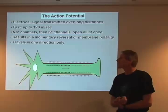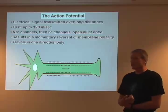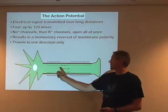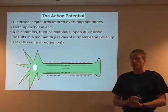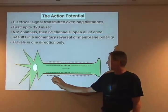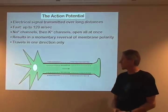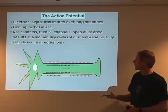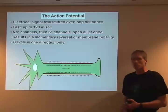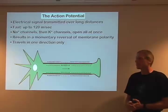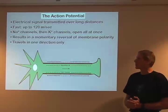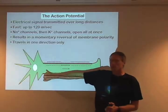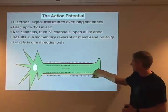The action potential is quite fast — up to 120 meters per second. The way it works is that sodium channels let sodium in, potassium channels then let potassium out, and you have a momentary reversal of the membrane potential. At the resting state, you have positive charges on the outside and negative charges on the inside throughout the whole cell body. There's a momentary switch where sodium ions come in, creating a membrane potential that's positive inside, and then potassium ions go out and it reverses back to normal. This little pulse of positive charges starts at the axon near the cell body and goes towards the terminal end.